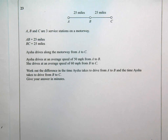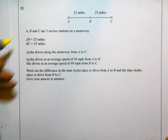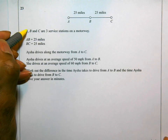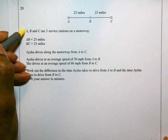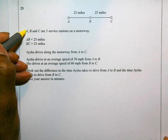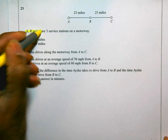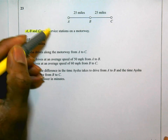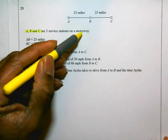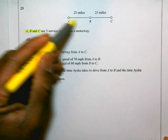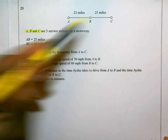This is question 23 on the foundation calculator paper. The question says A, B and C are three service stations on a motorway — there's A, B and C.